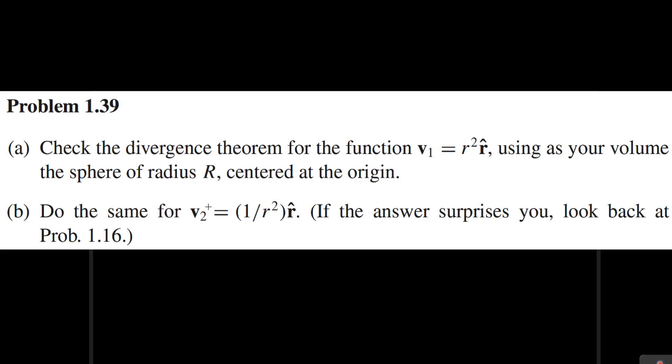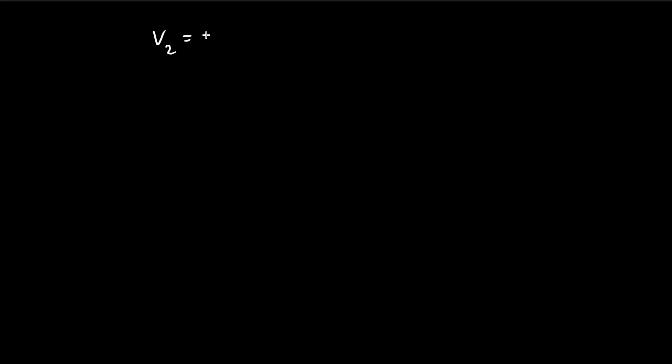Now let's check the divergence theorem for the vector field in part b. The vector field is given as 1 over r squared in the r direction. Let's do the surface integral first.